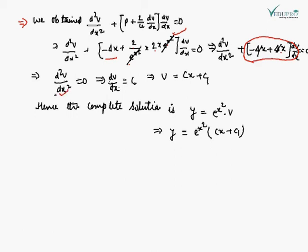From d²v/dx² = 0, integrating gives dv/dx = c (constant). Integrating again, v = cx + c₁. Therefore the complete solution is y = e^(x²)·v = e^(x²)·(cx + c₁). This is the required solution of the given differential equation.